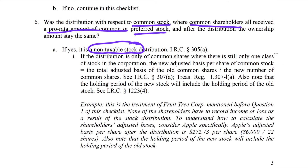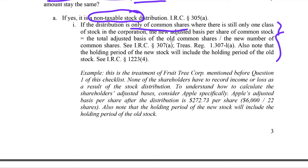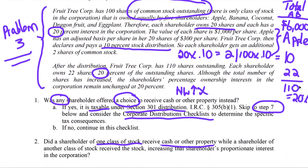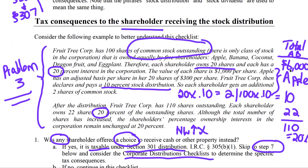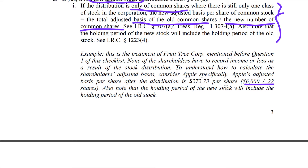Now we calculate the basis. If it's only one class of common shares — you're receiving the same class before and after — you take the basis of the old common shares and divide by the new number of shares. In our Fruit Tree example: Apple's total basis of $6,000 divided by 22 new shares equals $272.73 per share. The per-share basis goes down from $300 to $272.73.